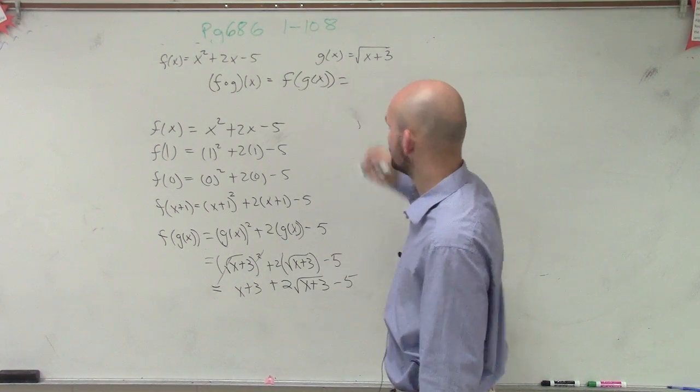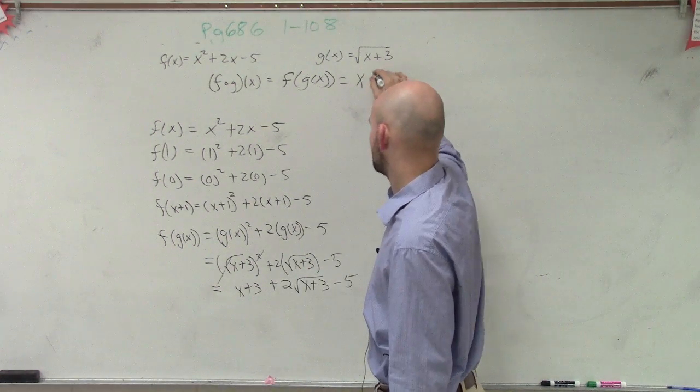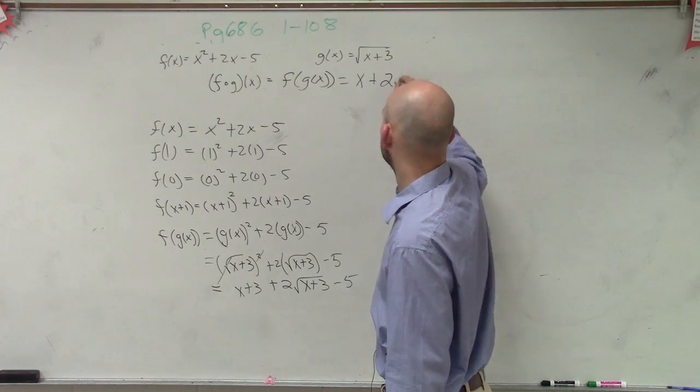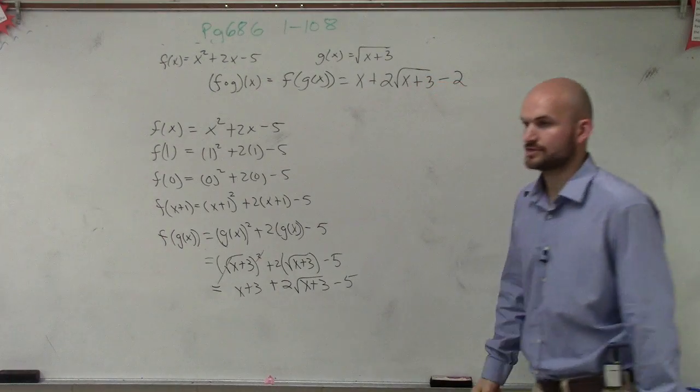So this f of g of x is just going to equal, I could say, x plus 2 square root of x plus 3 minus 2. And that's your final answer.